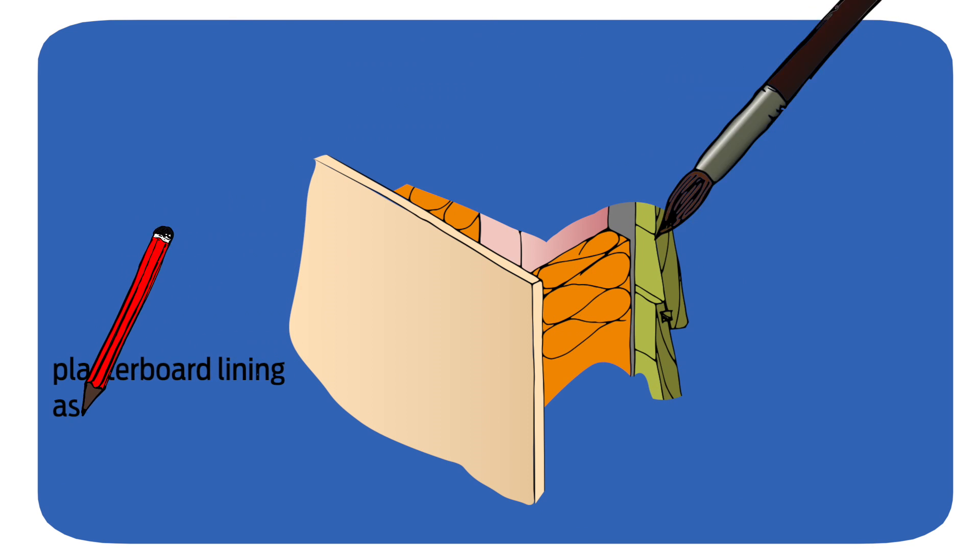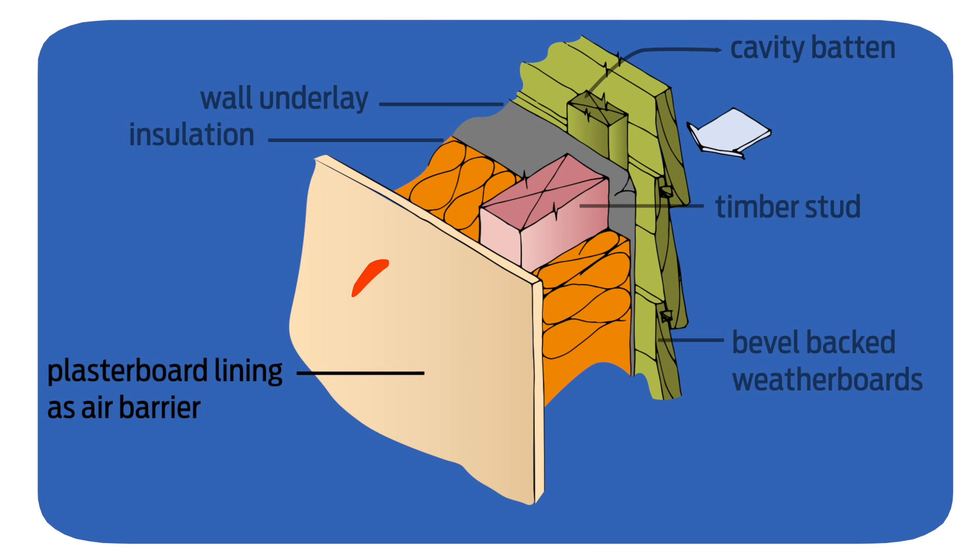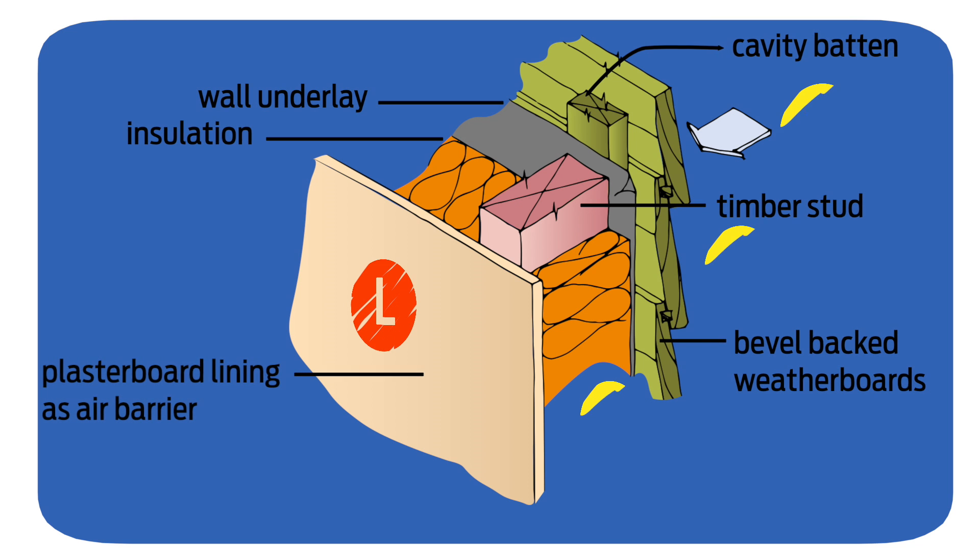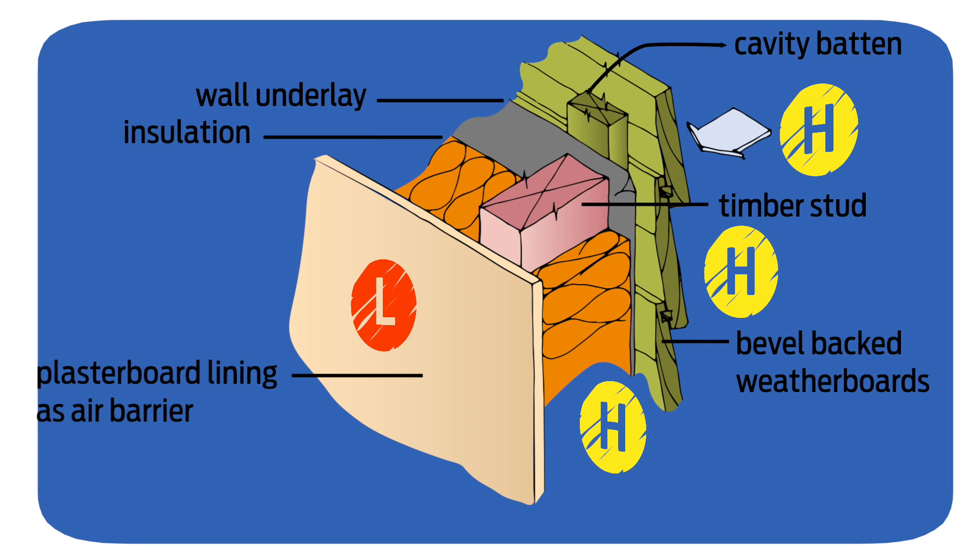An air barrier is effective at dealing with air-carried water by resisting air movement and keeping pressure equalized within the framing and outside the cladding.